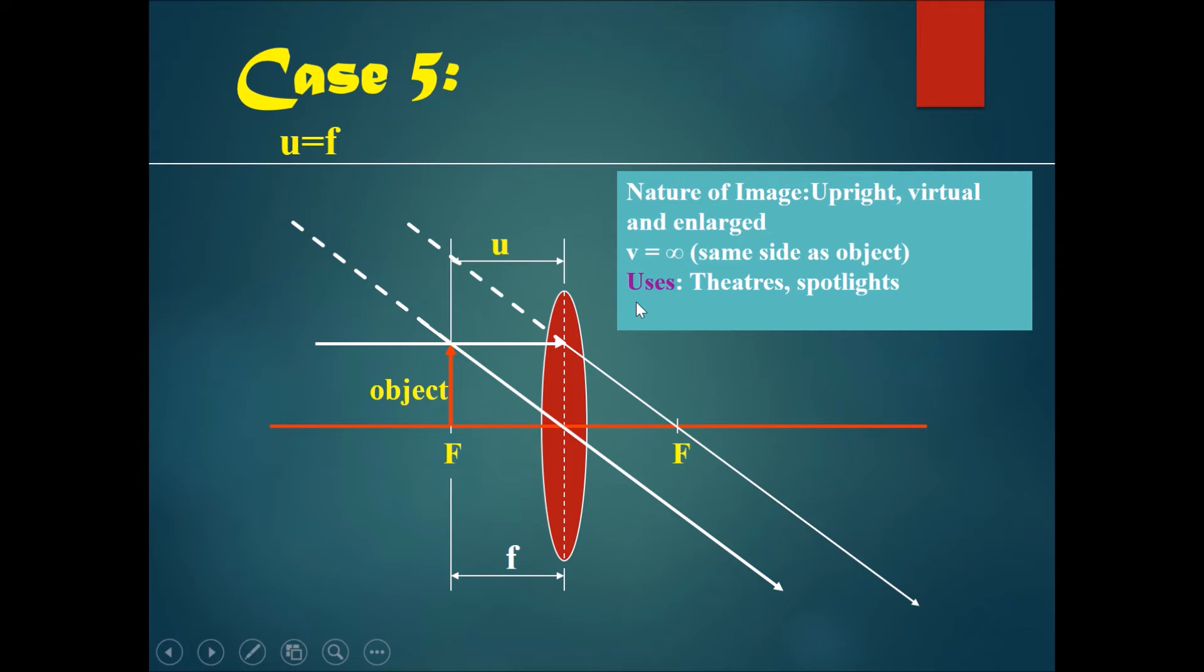And so now we have case 5, which is, it gets even more interesting. So now the object is exactly on the focal point on the left side. So what will happen now? Let's take a look.